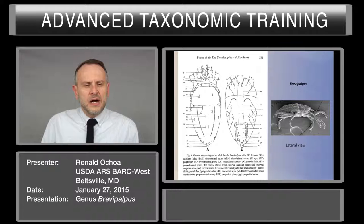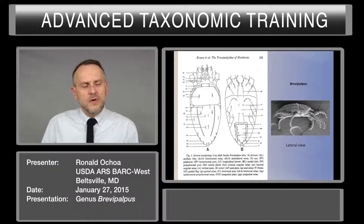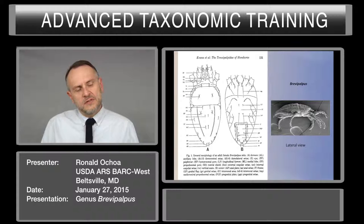Another problem is that because they are flat ventrally, it is really hard to understand how they appear in lateral view. However, here you can see a very nice photo of a lateral position of a Brevipalpus mite and you can see how the hump over the body is. This hump can change in position — sometimes very posterior, sometimes in the middle, or sometimes divided into two different humps — and that also helps to identify species.